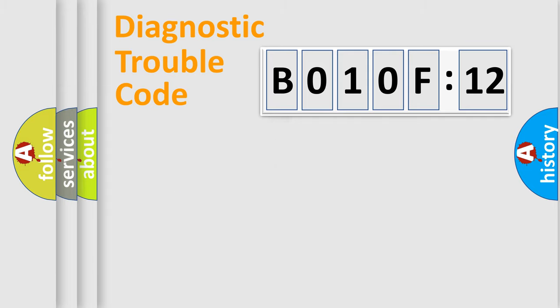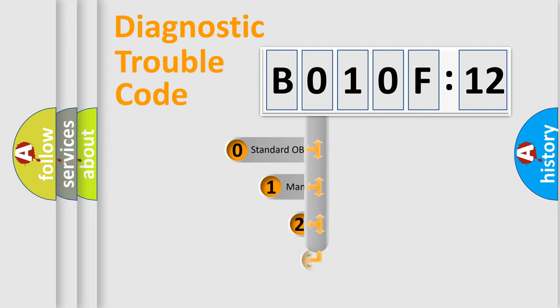Powertrain, Body, Chassis, Network. This distribution is defined in the first character code.